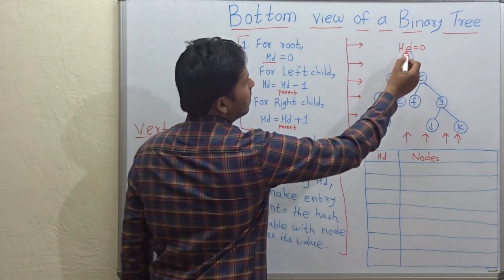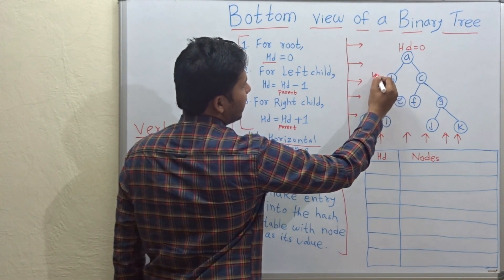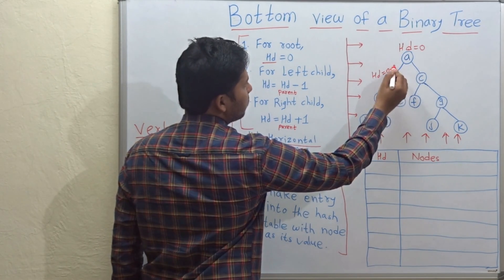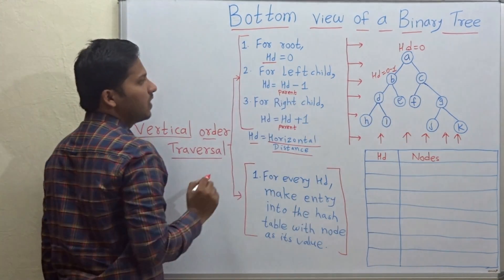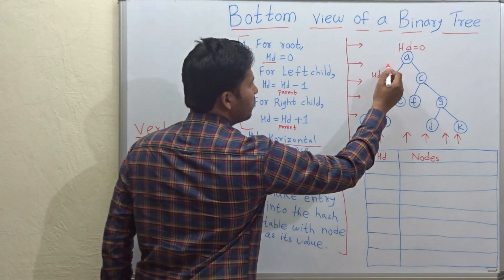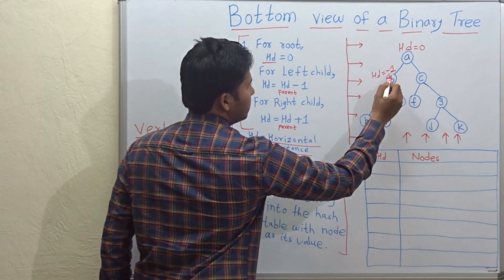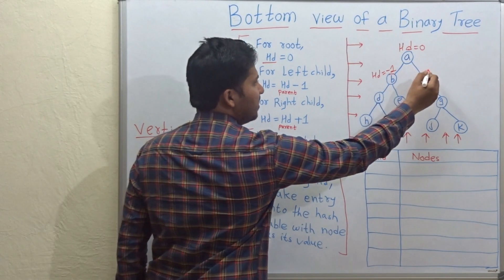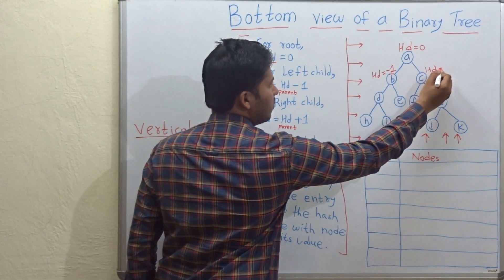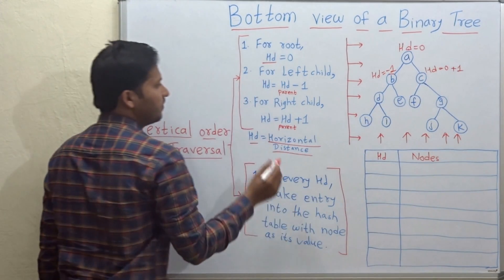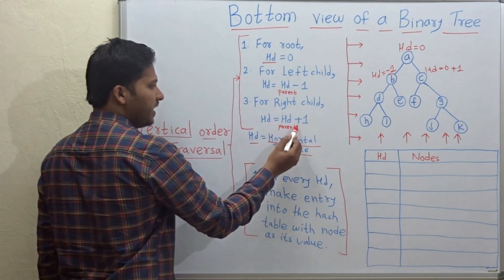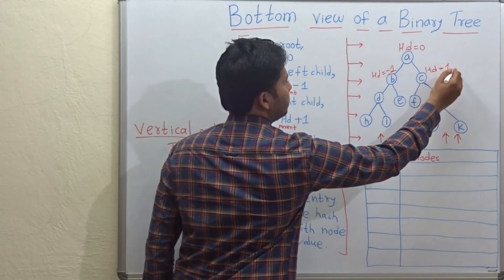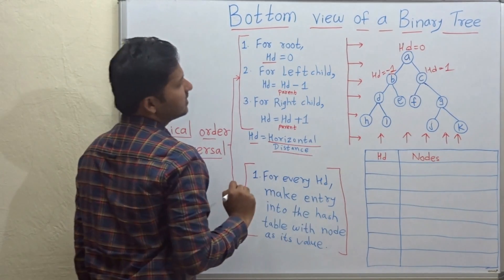So for left child b, hd will be parent hd of 0 minus 1, which equals minus 1. So hd for b will be minus 1. And for right child, hd will be equal to hd of parent plus 1, so 0 plus 1 equals 1.